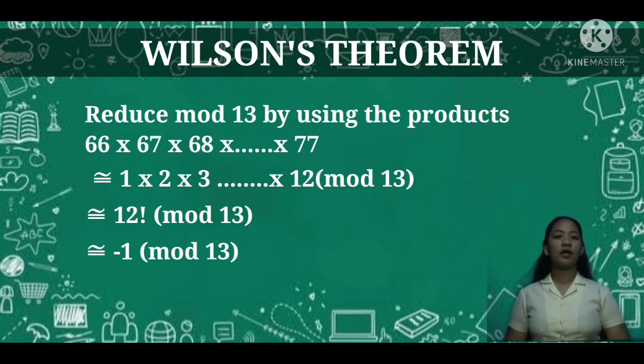Which we can write as 12! (mod 13), which we know is congruent to -1 (mod 13) by Wilson's theorem: (p-1)! ≅ -1 (mod p).